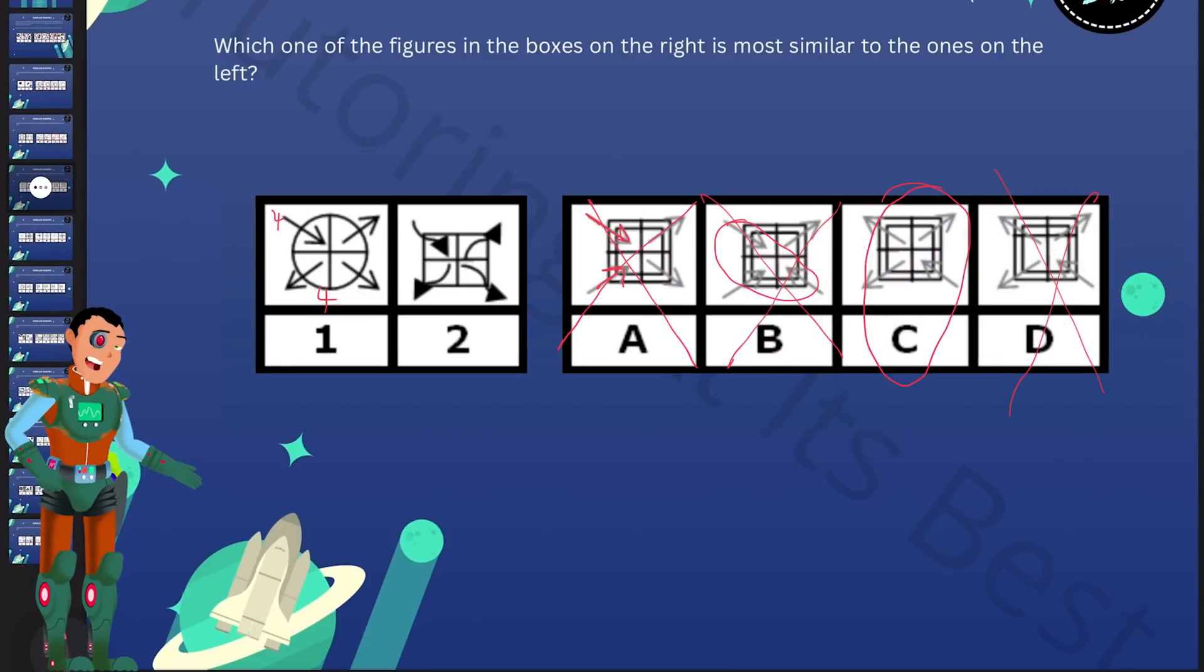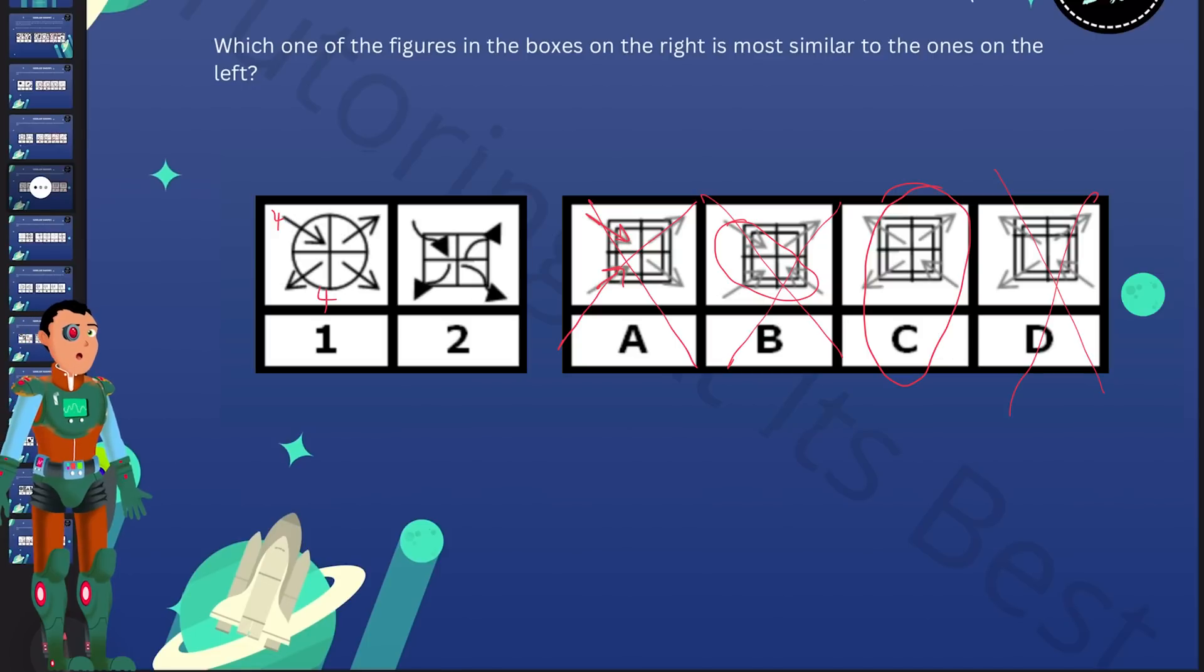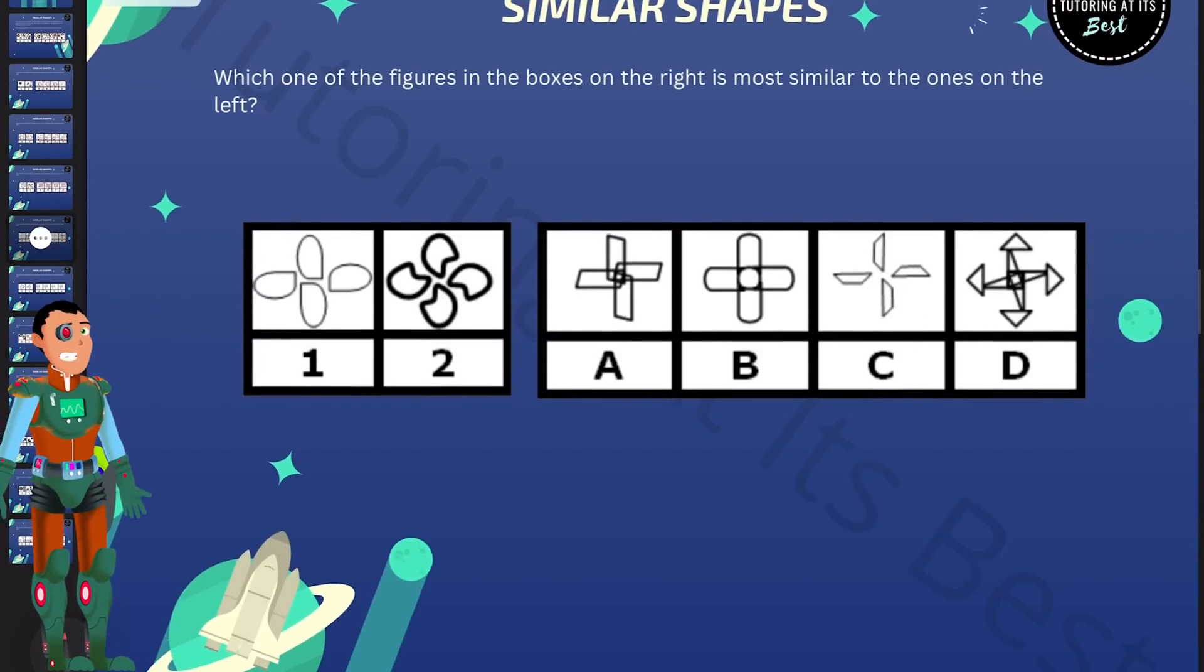Again, if we take a look at D, you can also notice that there are three arrows pointing out and one arrow pointing in, but it is not being divided equally. Moving over to the next question. What do we notice about one and two?